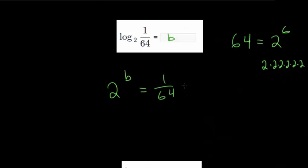So we could rewrite this as 2 to the b power, where b is our logarithm that we're trying to find, is equal to 1 over 2 to the 6th power. But we're dividing by 2 six times. So repeated division is negative exponents.